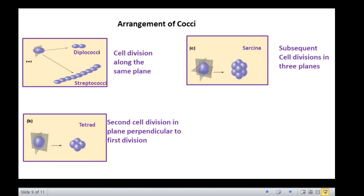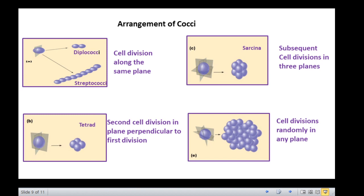Suppose that the cells do not separate at all and divide randomly in different planes. They form a cluster or group of cells of irregular arrangement. This is called staphylococci. These cells resemble a bunch of grapes.